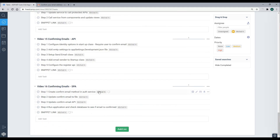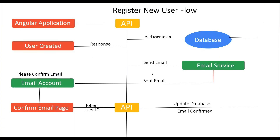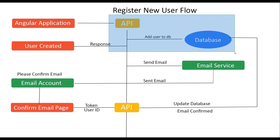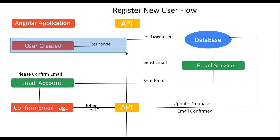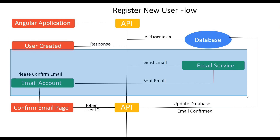Let's look at the diagram from the last video. What we got done so far is we send the user's information into the register API, and if the information is correct, we add it to the database. But at this point, the user's email is not confirmed. Then we gave the user a response. In the last video, we added an email service, so when the user creates an account, we send them an email.